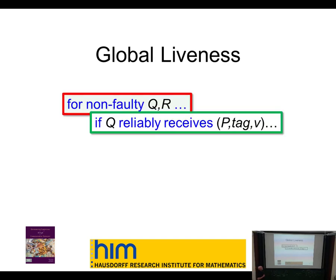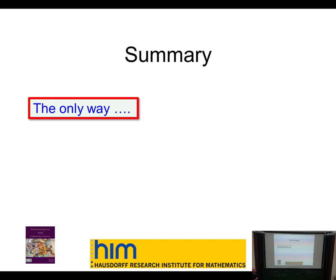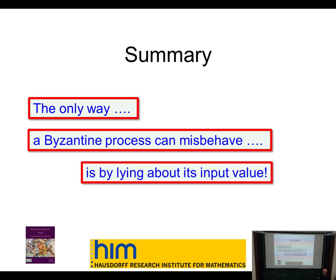Global liveness says that if one non-faulty process receives a message, the other one does as well. What this means is: the only way a Byzantine process can misbehave and not get caught is by lying about its input value. If you catch a process misbehaving you can ignore it. If a Byzantine process tries to send different messages to different processes, the algorithm I'll show you will catch it.